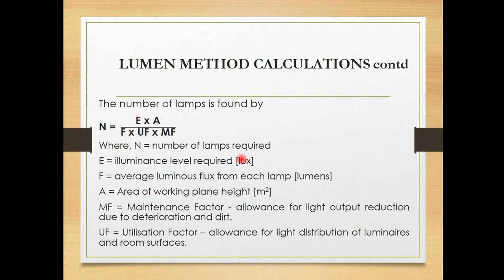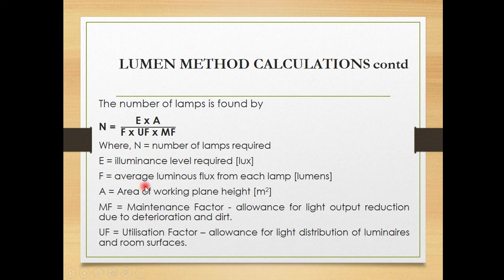To work out the number of luminaires required, we use a formula where N is the number of lamps required, E is the illuminance level required on the work surface in lux, A is the working plane area in square meters, F is the average luminous flux from each lamp, UF is the utilization factor, and MF is the maintenance factor.